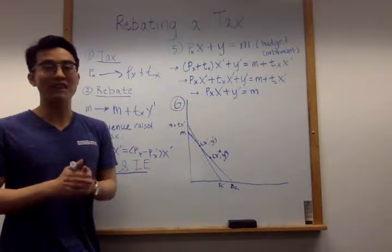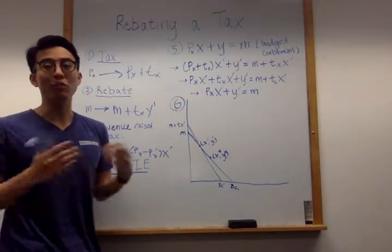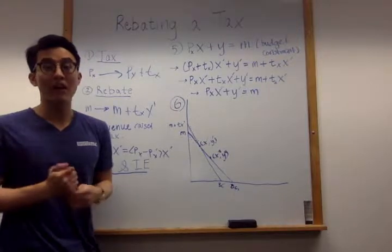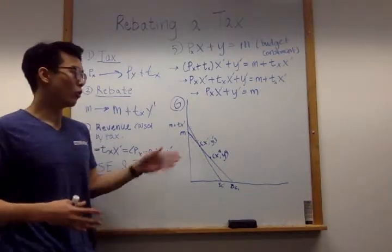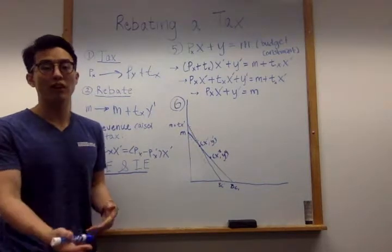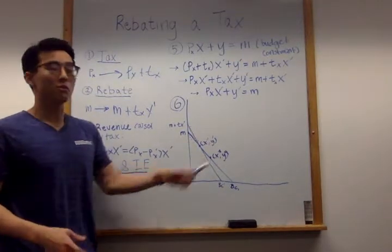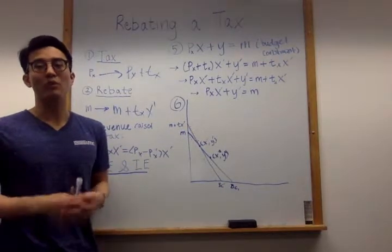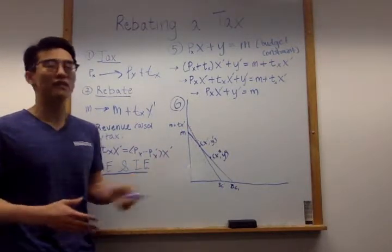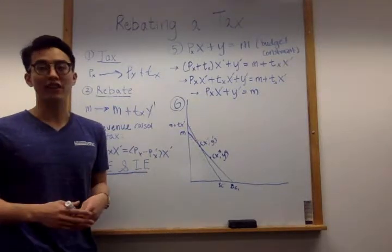This would mean that the consumer is now going to consume a new bundle, X prime comma Y prime, which was before affordable under the old budget line, but was preferred over in favor of the optimum bundle they had before. So in other words, through the tax rebate plan, the consumer is worse off consuming less of good X and more of all the other goods.